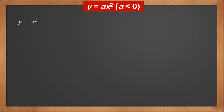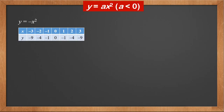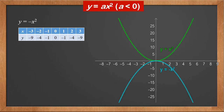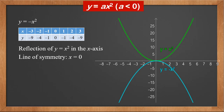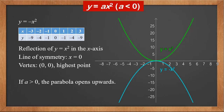Now let's look at y equals minus x squared. The x values are still the same, but all y values are opposite to those of y equals x squared. Therefore we get a curve that is a reflection of y equals x squared in the x axis. The line of symmetry is still the y axis and the vertex is still the origin. However, it's the highest point now, whereas in y equals x squared it is the lowest point. In general, if a is positive, the parabola opens upwards. If a is negative, the parabola opens downwards.